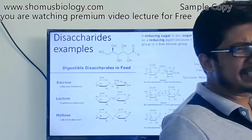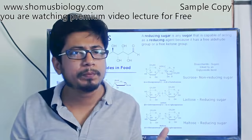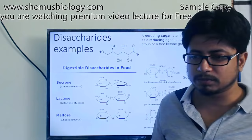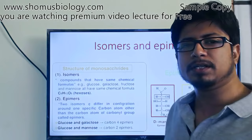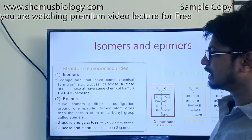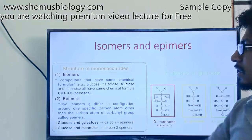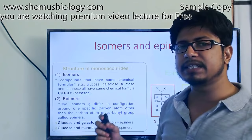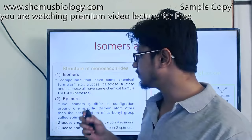This is something worth remembering, since CSI NET can ask questions about the linkage between monomers and what kinds of monomers form dimers. Apart from that, we need to understand isomers, epimers, anomers, and related concepts. Isomers are compounds that have the same chemical formula — for example, glucose, galactose, fructose, and mannose are isomers of one another, all sharing the formula C6H12O6, which can be written as (CH2O)n where n equals 6.